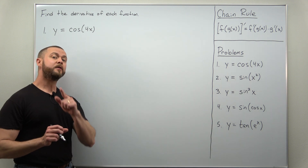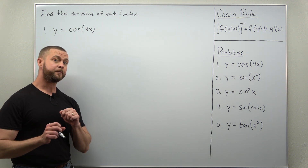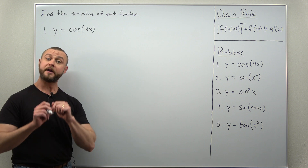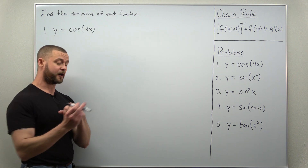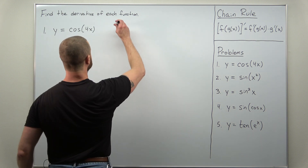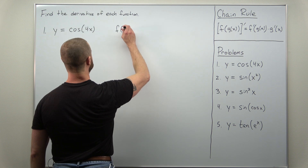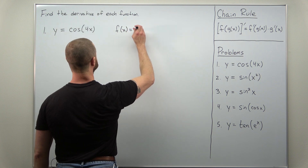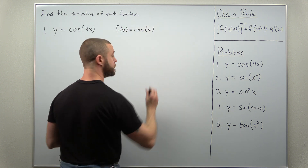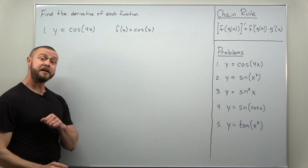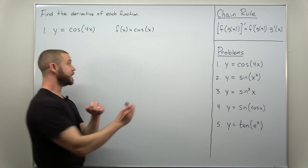We're going to find the derivative for cosine of 4x. Our first step, we're going to identify the outer and inner functions. Here our outer function is cosine of x and our inner function is 4x.